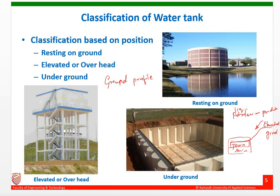We normally go for storage tanks resting over the ground to store fluids like petroleum products or any chemicals. When it comes to water supply, resting-on-ground tanks are preferred when the township is at a low-lying area and the tank is planned at a higher elevated plane. In such situations, tanks resting over the ground or underground are suitable.